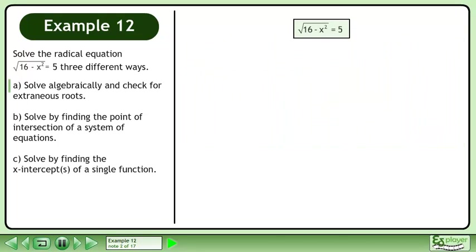Rewrite the equation. Square both sides to get rid of the radical. This gives us 16-x² = 25.